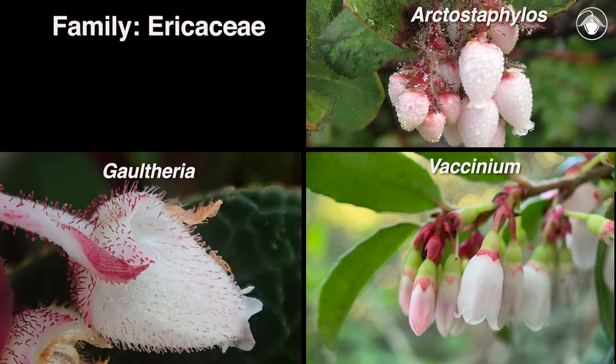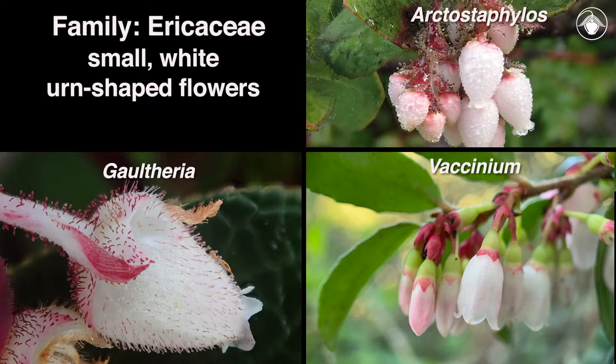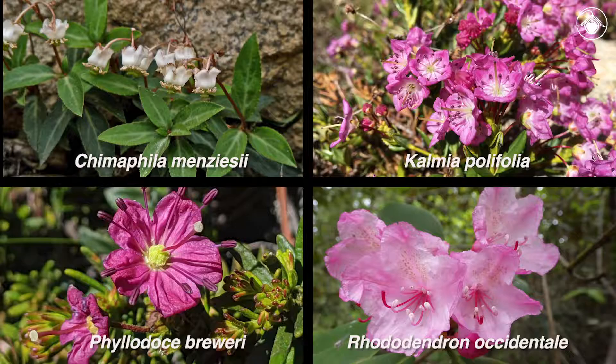All of these genera have small white urn-shaped flowers that are typical of the Ericaceae. Although these three genera have similar flowers, there's a lot of variation in floral color and shape across the Ericaceae. Here are some examples that show some of the floral diversity we see in California members of the heath family: Chimaphila, Kalmia, Phyllodoce, and Rhododendron.